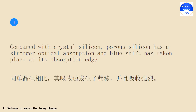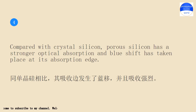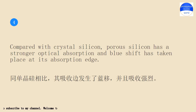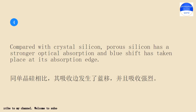Compared with crystal silicon, porous silicon has a stronger optical absorption, and blue shift has taken place at its absorption edge. Compared with crystal silicon, porous silicon has a stronger optical absorption, and blue shift has taken place at its absorption edge.